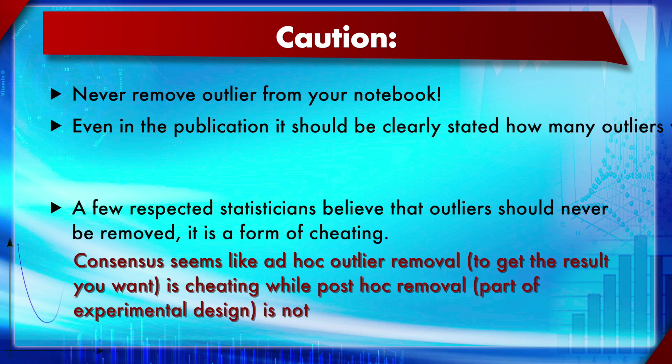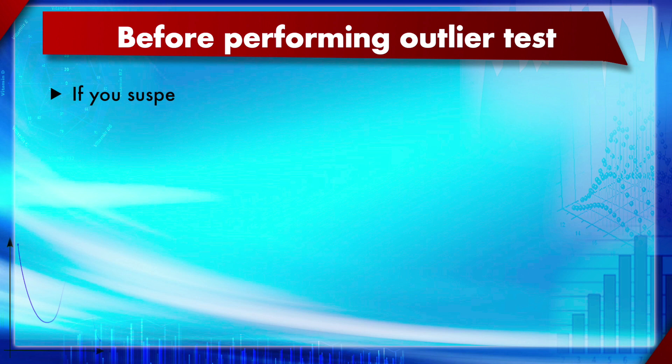A consensus seems to be emerging that ad hoc outlier removal — that is, subjective removal — is wrong, but post hoc removal is accepted. Post hoc removal means that as part of the experimental design itself, you specify which method will be used for outlier removal, then perform that test once you have the data and accept whatever that test says. You cannot subjectively select which values to act on.